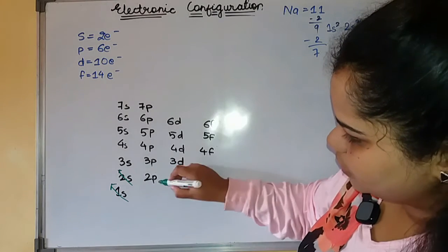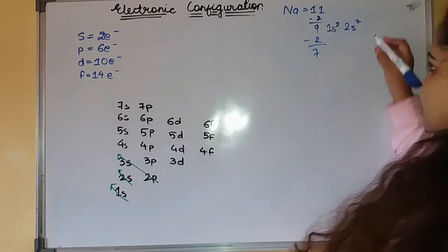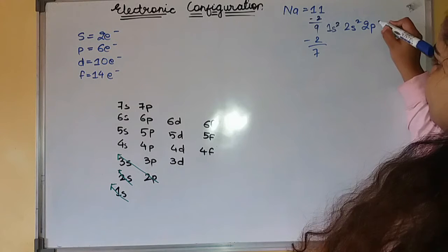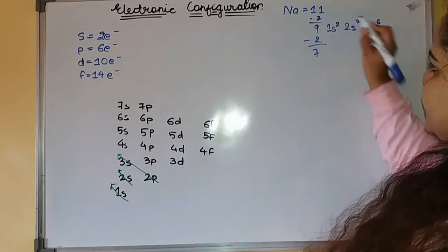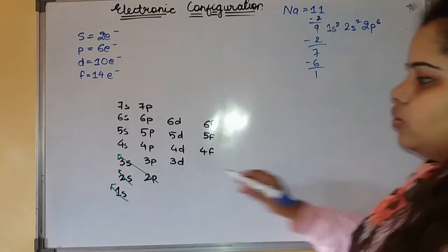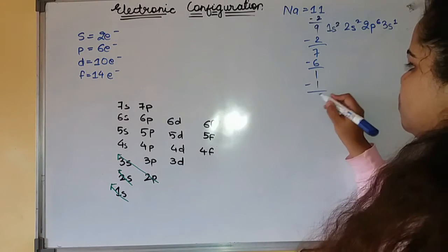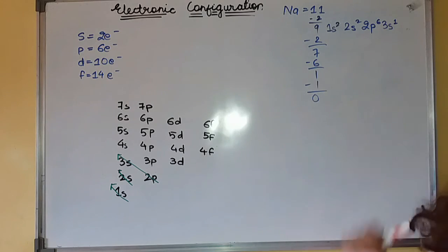Then you have to fulfill 2p and 3s. Write it down, 2p⁶. 1 is remaining. So 3s will contain 3s¹. So our whole electronic configuration of sodium is done.